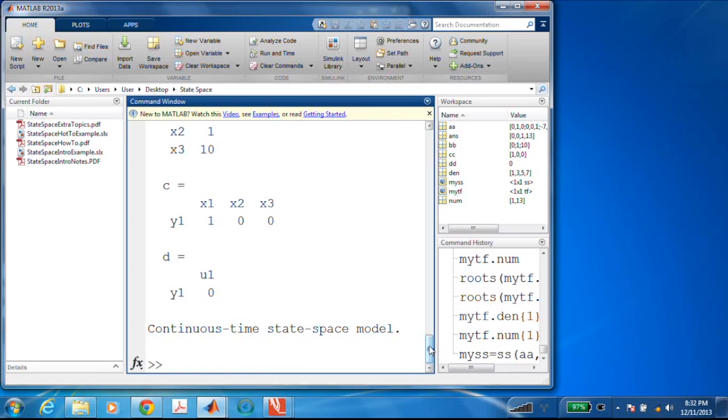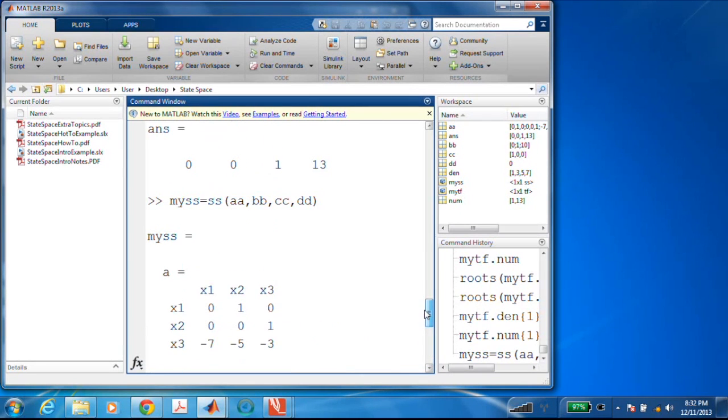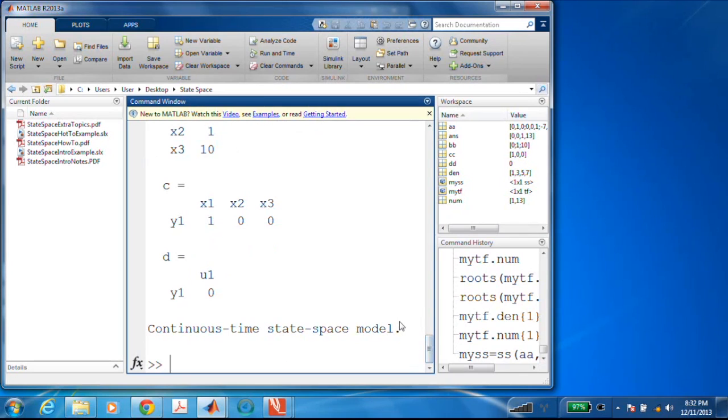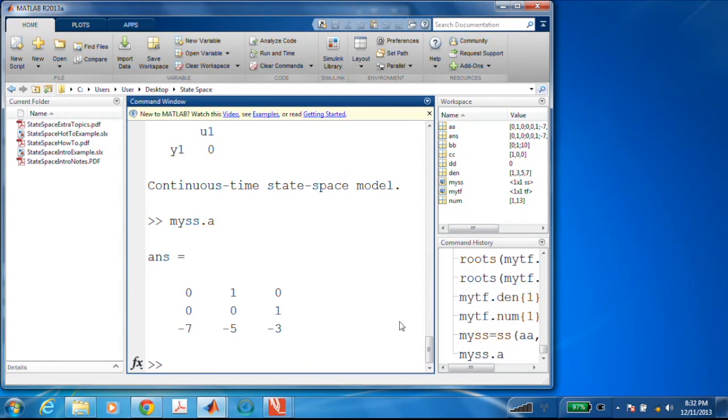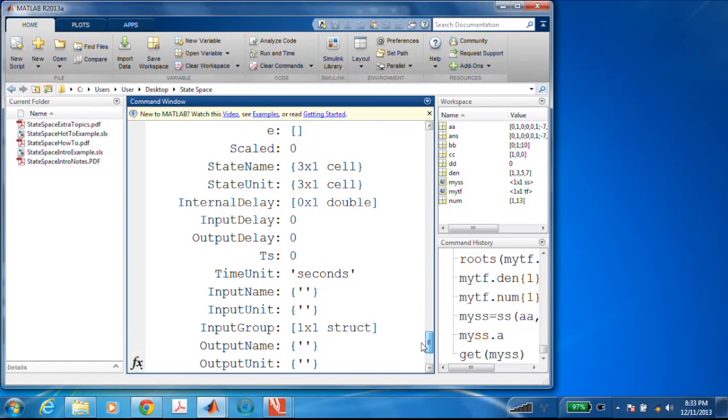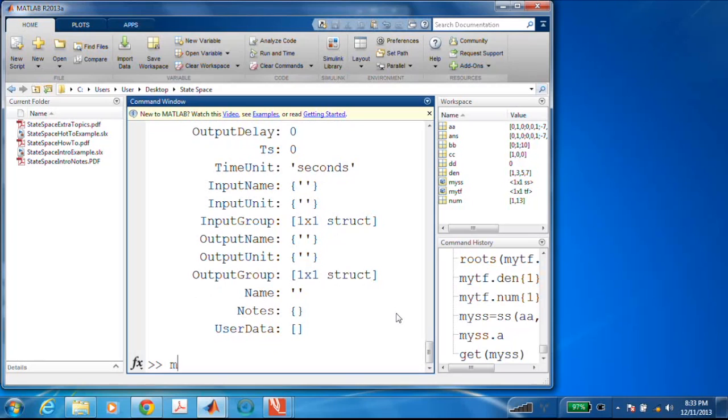Now I have this whole big state space object, and I could access pieces of it. I could go, my SS dot a and get out the A matrix and really do all kinds of interesting things with it. If I look at get my SS, you notice here, I can actually name the states. So for instance, I can name the inputs, the outputs, I can give them units. Here's where I can name the states. Let's just do that just for fun.